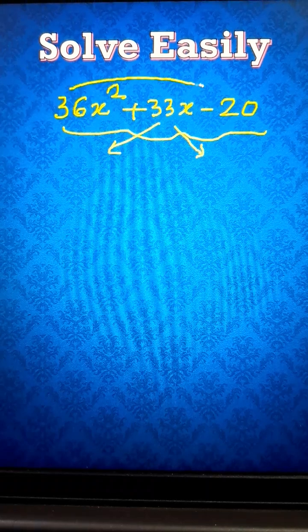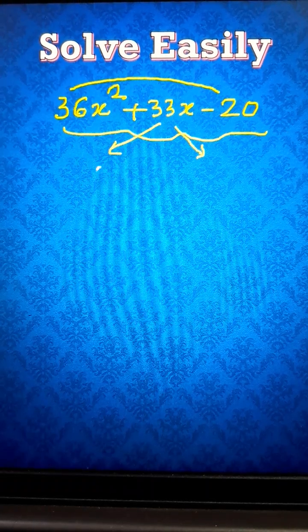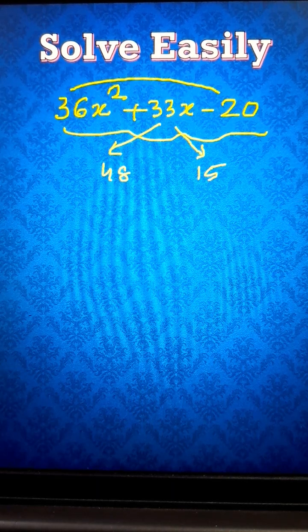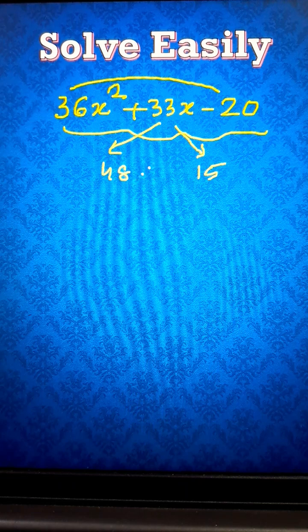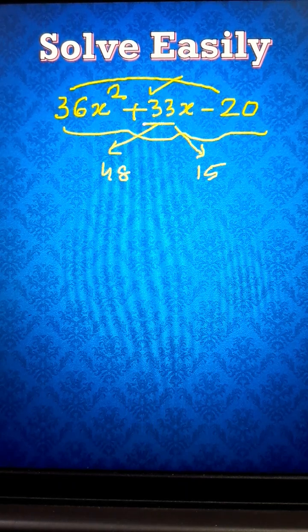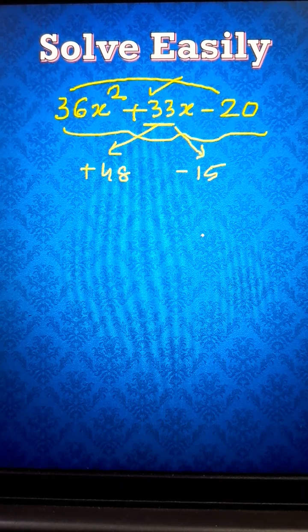36 times 20 is 720, and 48 times 15 is also 720. But 48 and 15 can give you the middle term factor, which is 33. So plus 48 and minus 15, right.